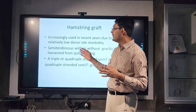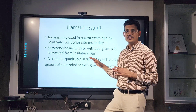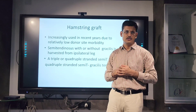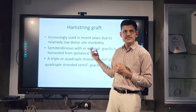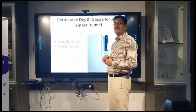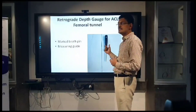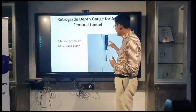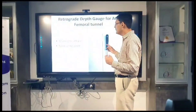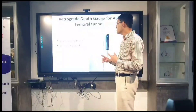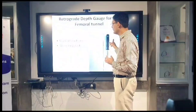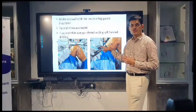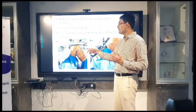For the hamstring graft, semitendinosus and gracilis both can be harvested. Normally I use only semitendinosus in about 90% of my cases. Very rarely, if the hamstring is very thin, we might use a gracilis graft. A very important innovation is the retro ruler device, which increases the accuracy of your femoral tunnel. This device gives you the tunnel length at the first step of guide pin insertion, making your surgery very simple and predictable. If you have a short tunnel, you can re-drill, and you can plan your surgery at the first step.